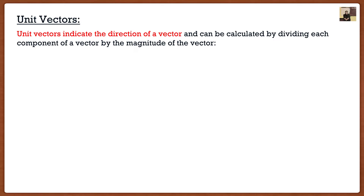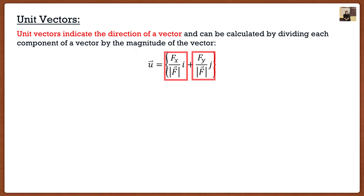With the components we can find the magnitude, so we have everything we need. The unit vector is found by taking the x component divided by the magnitude and the y component also divided by the magnitude. The unit vector still has components in the i and j directions — it is a vector. And note that when we divide, say, newtons by newtons, the units cancel out, so the unit vector is actually unitless.